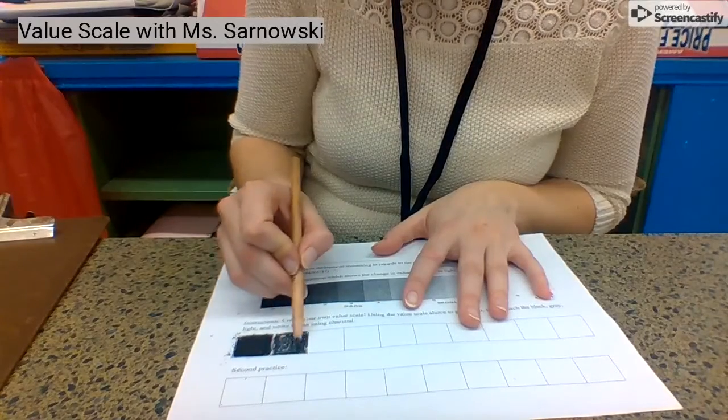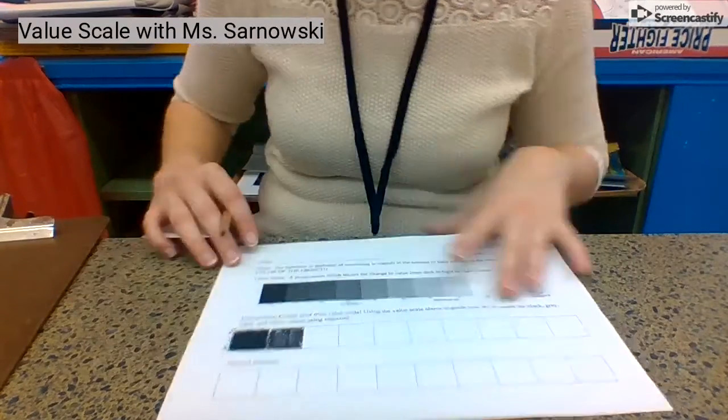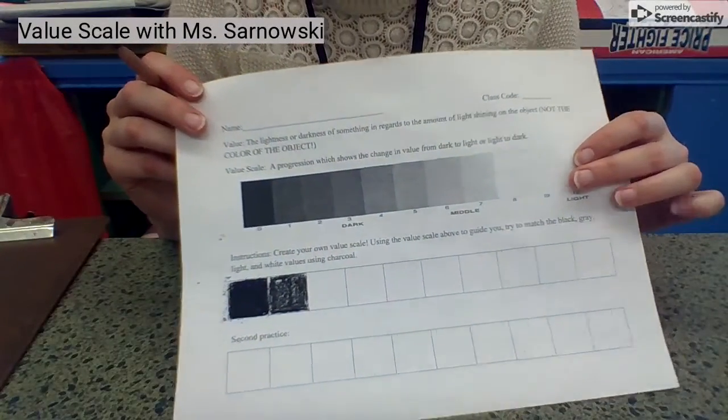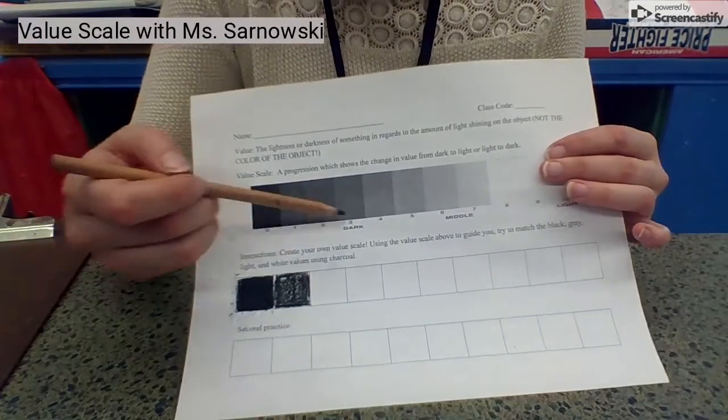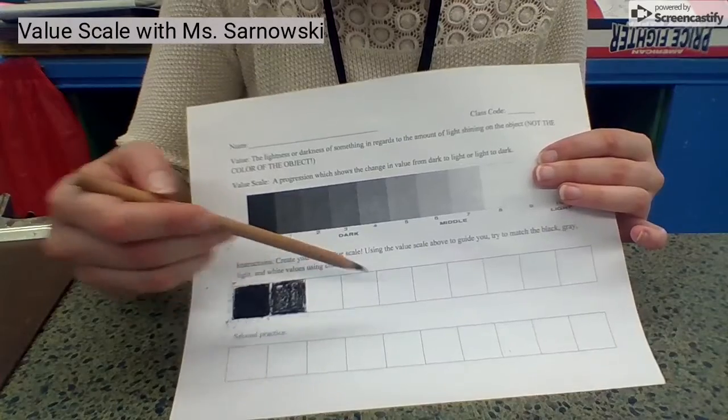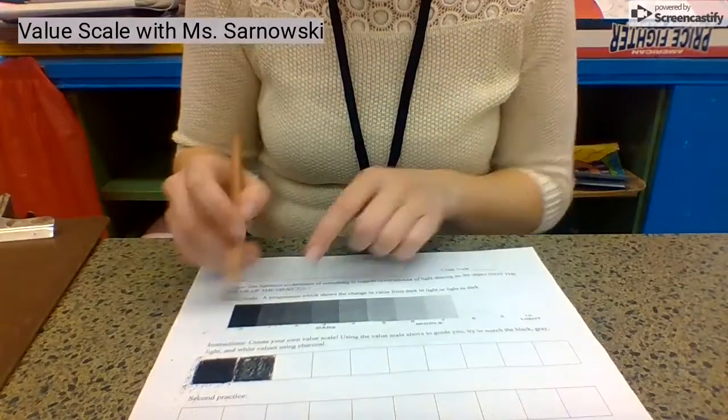I'm just gonna do one layer. I color it in, and even on the computer you can see the difference. You want to start to get lighter around the middle. So I'm gonna keep doing it and trying to match my box.